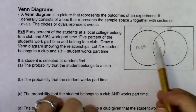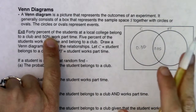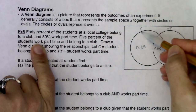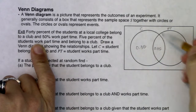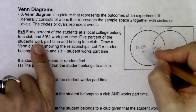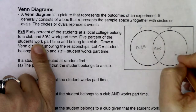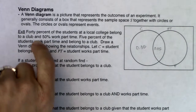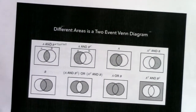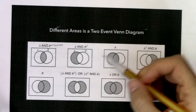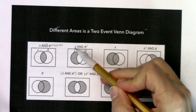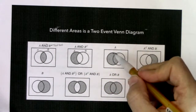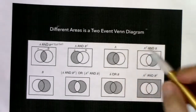Here's the most common error — students put 40% directly in the left moon. But 40% of students belong to a club means the entire club circle must add up to 40%. It's the left moon and the football together. So I take 0.40 minus 0.05, giving 0.35 for the left moon — those are students who only belong to a club and don't work part-time.